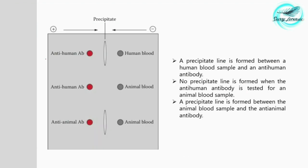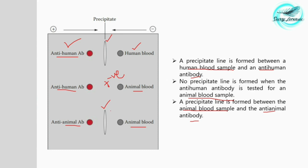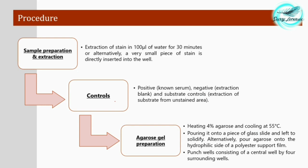The precipitate line is formed between a human blood sample and an anti-human antibody placed at the anode side, while the antigen is placed at the cathode. If the sample is animal blood tested with anti-human antibody, no precipitate line forms — this is a negative result. Anti-animal antibody reacts with animal blood to form a precipitate line. No precipitate line forms when anti-human antibody is tested against animal blood, but a precipitate line does form between animal blood and an anti-animal antibody.